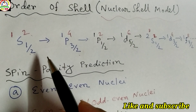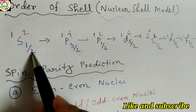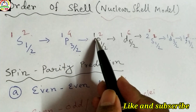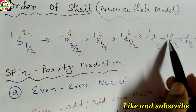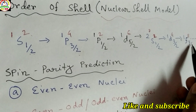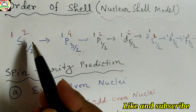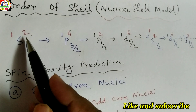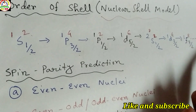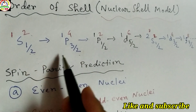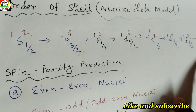In the nuclear shell model, first I discuss the order of shells. The order is: 1s(1/2), 1p(3/2), 1p(1/2), 1d(5/2), 2s(1/2), 1d(3/2), 1f(7/2), and so on. The corresponding magic numbers are 2, 4, 2, 6, 2, 4, 8, and the spin values are 1/2, 3/2, 1/2, 5/2, 1/2, 3/2, 7/2.